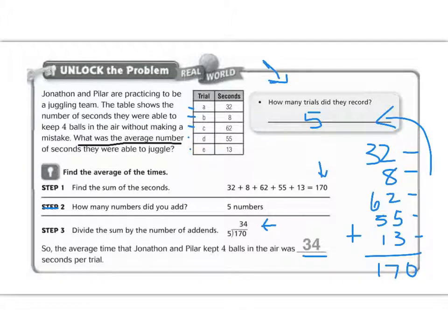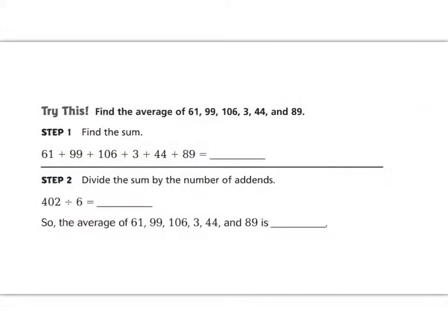In the try this section, we'll do all the work ourselves. Try this. Find the average of 61, 99, 106, 3, 44, and 89.